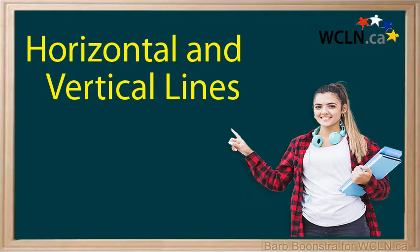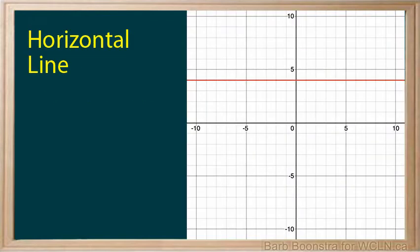Horizontal and vertical lines have recognizable equations and unique slopes. A horizontal line is one that is parallel to the x-axis.